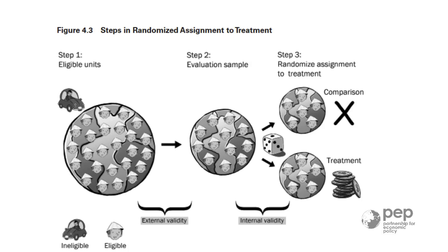We want it to mirror the observed characteristics, but also the unobserved characteristics. This sounds like a difficult task, but all we need to do is randomly select the experimental sample, and that subgroup will be representative of the population.